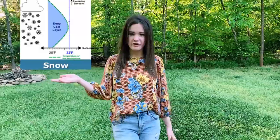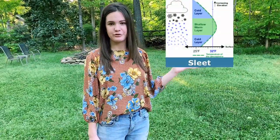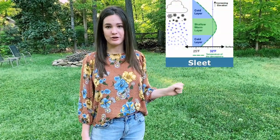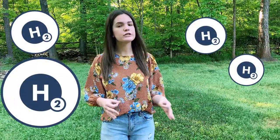Snow stays below the zero degrees Celsius mark as it falls to the earth and collides with the surface. Sleet melts past the zero degrees mark and then refreezes before it hits the surface of the earth. Freezing rain strikes the surface of the earth as a liquid and then refreezes, which is why it's incredibly unsafe. Another unsafe form of precipitation is acid rain, caused by the increasing levels of hydrogen in the air, usually due to pollution.